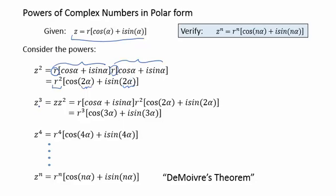Similarly, to calculate z cubed, we could write it as a multiplication of z times z squared. So it would be this complex number, times this complex number that we calculated in our last step. And again, by the product rule, we would multiply our two moduli, to get r cubed, and then add our arguments to get the 3 alpha.